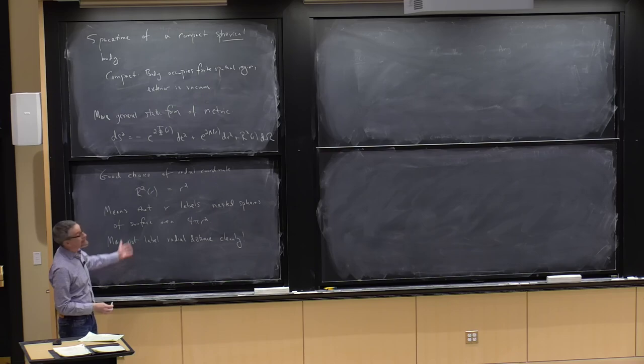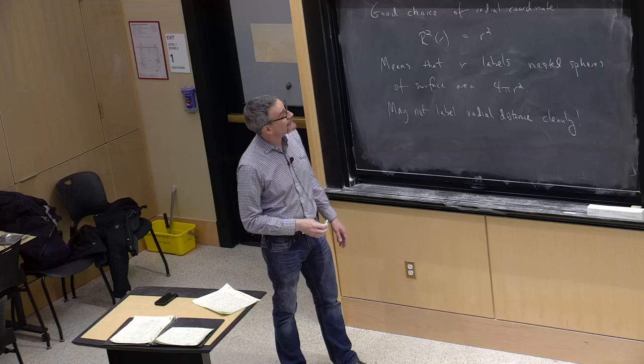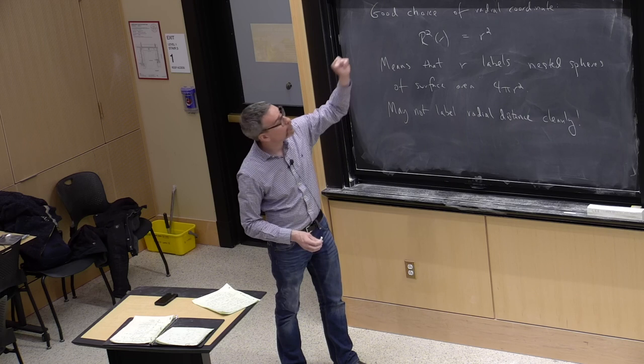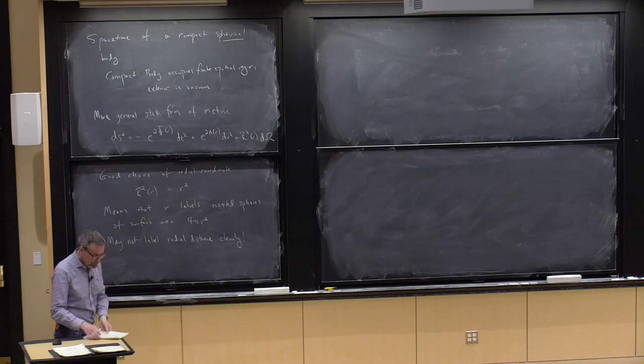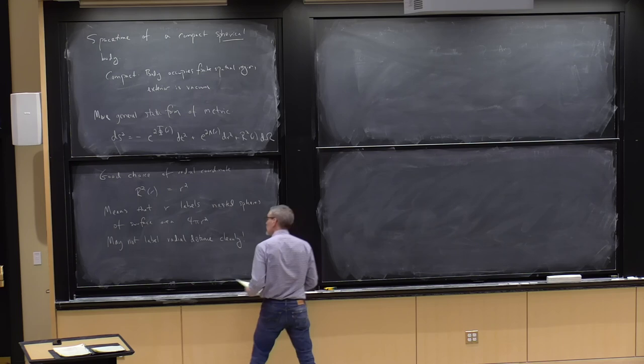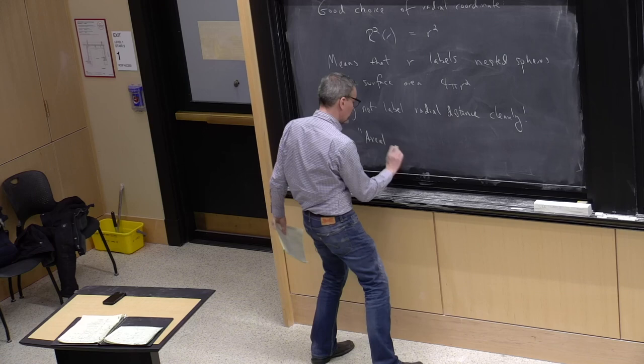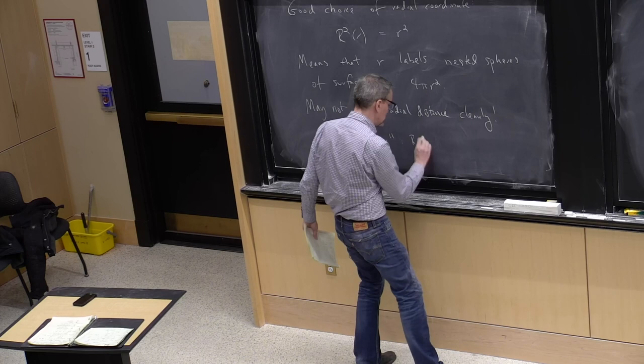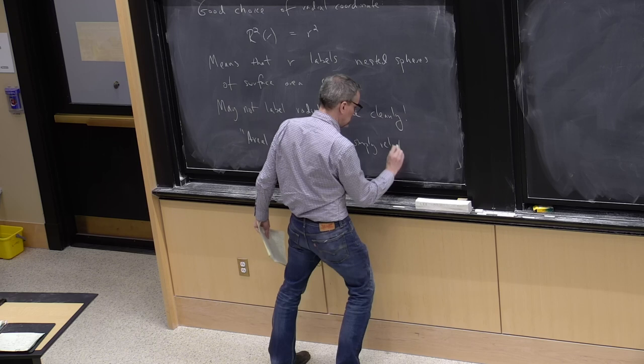So this is unlikely to label radial distance cleanly. In fact, it would only be the case that this cleanly labels radial distance if the function lambda were equal to 0. And as we'll see, that's generally not the case. So whenever we do things in a curved spacetime, things are always going to get a little bit messier. And what's nice about this is at least we do have a clean geometric meaning to the coordinate r. In fact, this is called an aerial radius, which is a radius simply related to surface area.